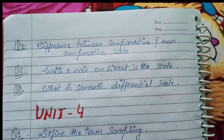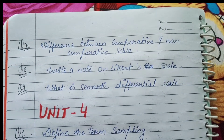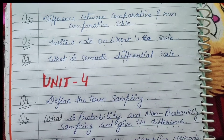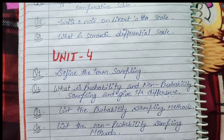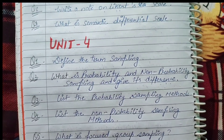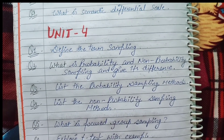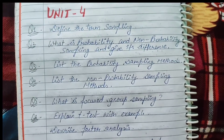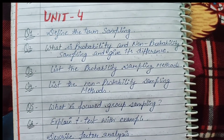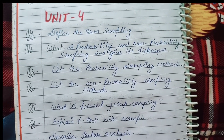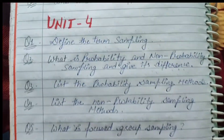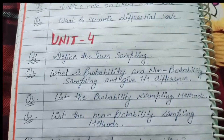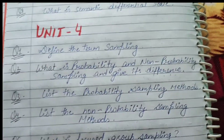Here are some more important questions: differences between comparative and non-comparative scale, write a short note on Likert scale, what is the semantic differential scale. Then in unit four: define the term sampling, what is probability and non-probability sampling and give their difference, list the probability sampling methods, and list the non-probability sampling methods.